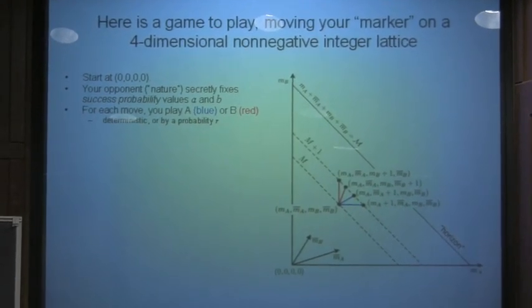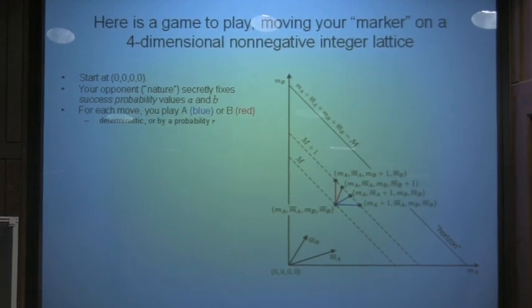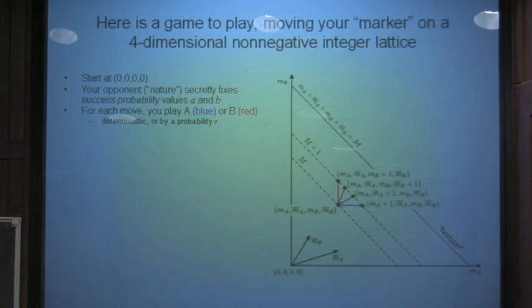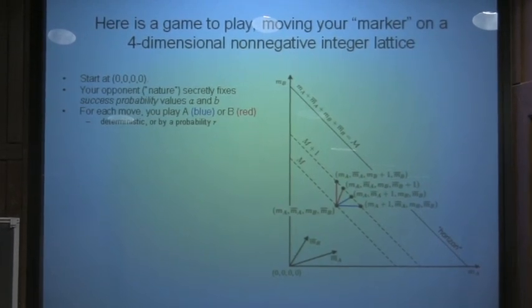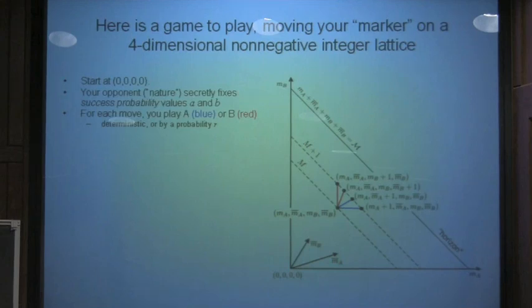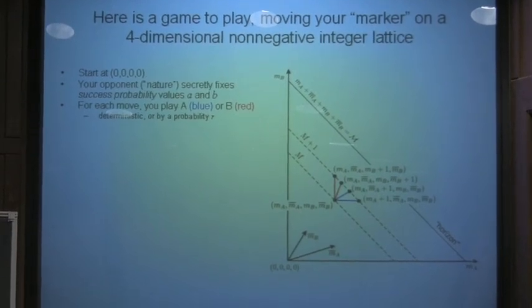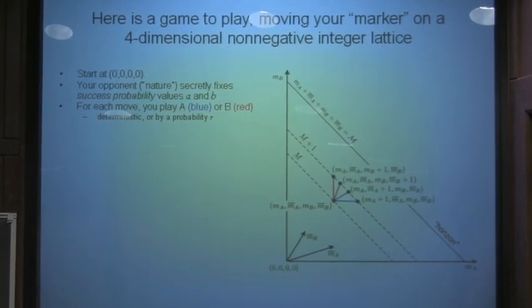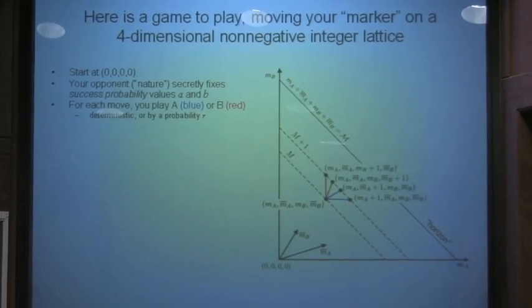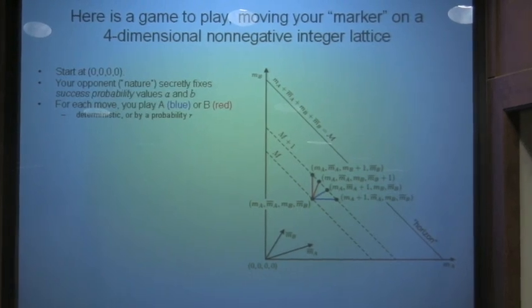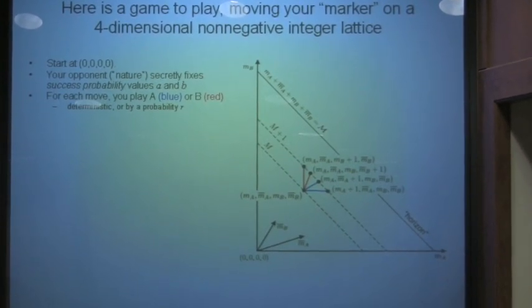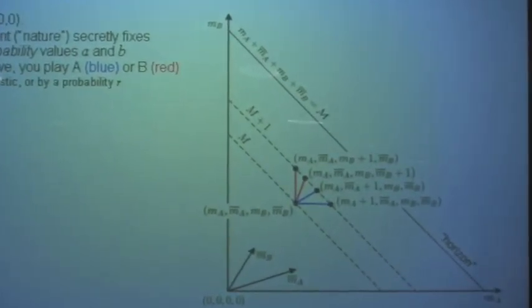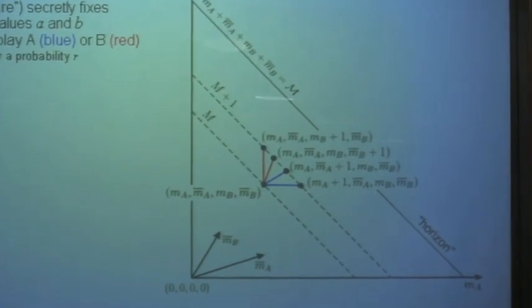What we get to do is for each move, we get to play either capital A, which I'll show in the picture as blue, or capital B, which I'll show as red. Our strategy can be a bit more complicated than nature's. At any point in the lattice, the strategy is pick red or pick blue. Or it could be a probabilistic strategy where every point is labeled by probability of picking red versus blue.